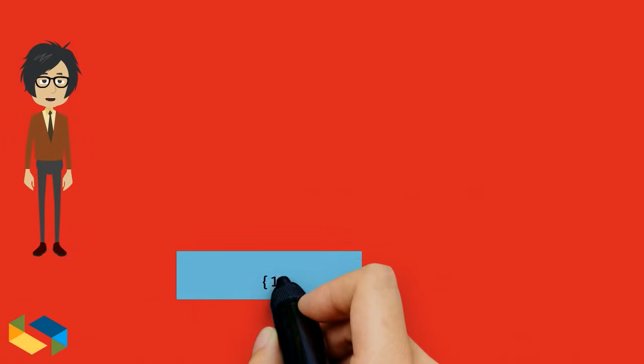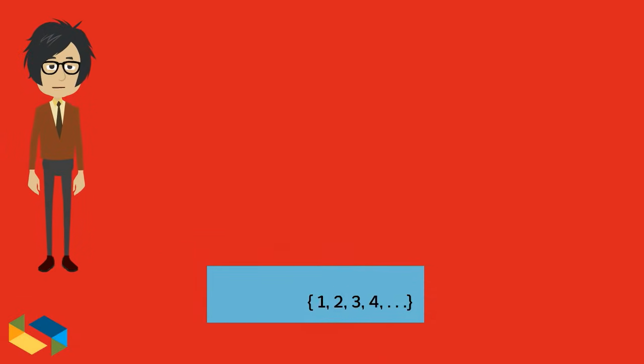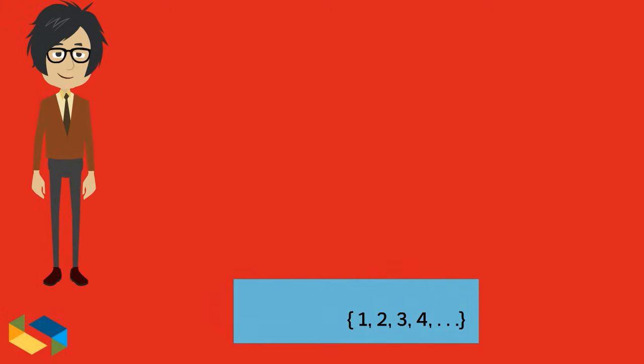Counting comes naturally to us as something that goes 1, 2, 3, 4 and so on. Hence, such numbers are grouped as natural numbers, with the symbol N.